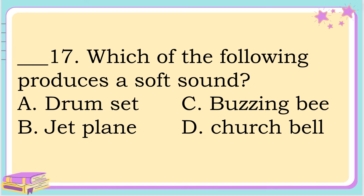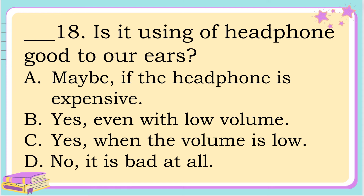Number 17. Which of the following produces a soft sound? A. Drum set. B. Jet plane. C. Buzzing bee. Or D. Church bell. The correct answer is letter C. Buzzing bee. Number 18. Is it good to use a headphone for our ears? A. Maybe if the headphone is expensive. B. Yes, even with low volume. C. Yes, when the volume is low. Or D. No, it is bad at all. The correct answer is letter C: yes, when the volume is low.